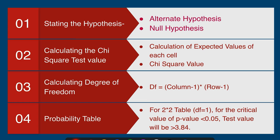Chi-square test has four steps. Number one is we need to state the hypothesis. We have two hypotheses: the alternate or research hypothesis, which says there is a relationship between two variables, and the null hypothesis, which says there is no relationship.